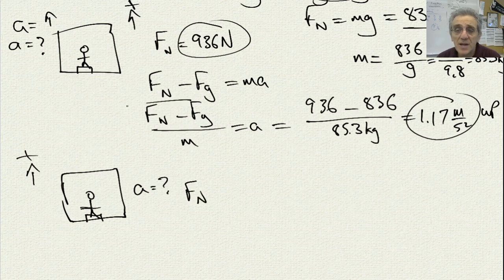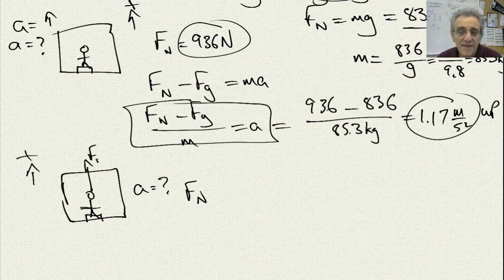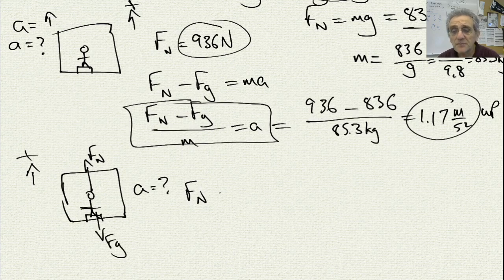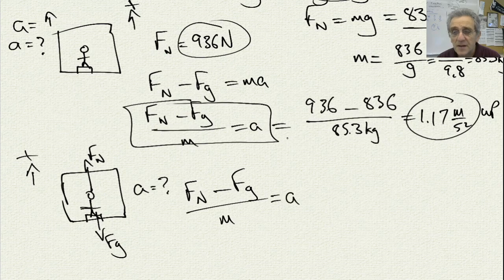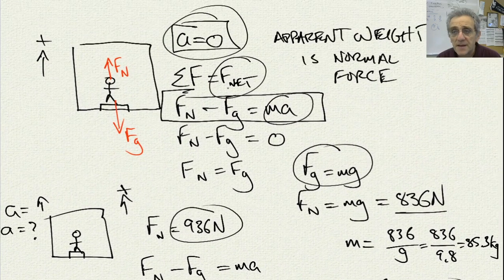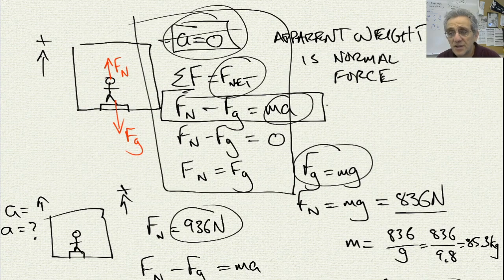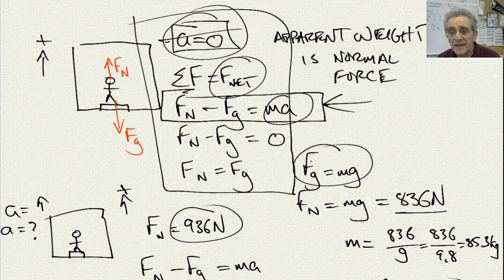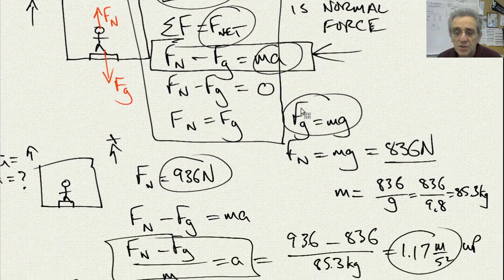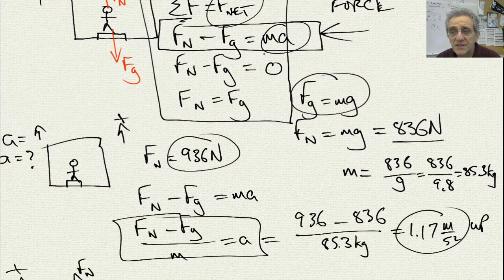It's the same equation as above because the free body diagram hasn't changed. We still have Fn going up and Fg going down as we did before. So, it's exactly the same as before, except for the fact that it's no longer zero acceleration. It's still the correct free body diagram equation. So now, all I've done here is divided both sides by M.